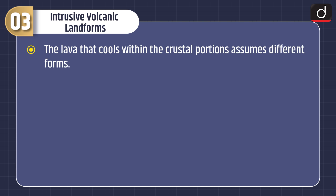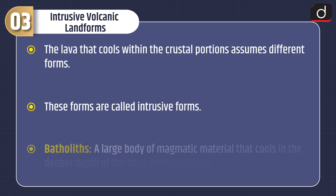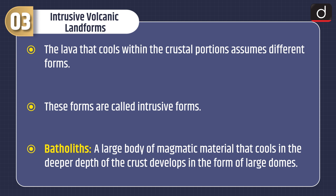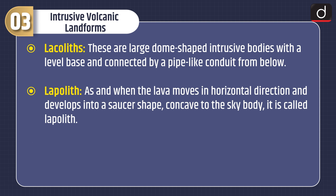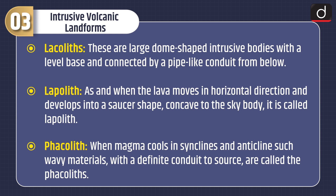Now let's discuss about intrusive volcanic landforms. The lava that cools within the crustal portions assumes different forms called intrusive forms. Batholiths: large bodies of magmatic material that cool at deeper depths of the crust, developing in the form of large domes. Laccoliths: large dome-shaped intrusive bodies with a level base connected by a pipe-like conduit from below. Lopoliths: when lava moves horizontally and develops into a saucer shape, concave to the sky, it is called a lopolith. Phacoliths: when magma cools in synclines and anticlines, such wavy materials with a definite conduit to source are called phacoliths.